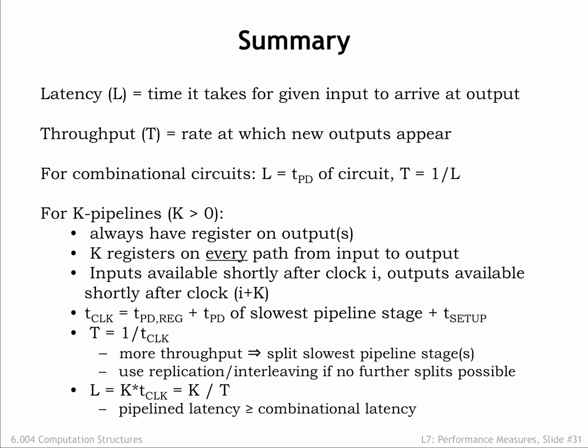We characterize the performance of our systems by measuring their latency and throughput. For combinational circuits, the latency is simply the propagation delay of the circuit, and its throughput is just 1 over latency.